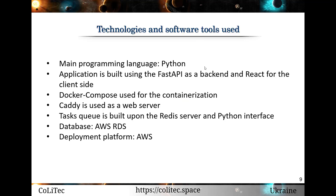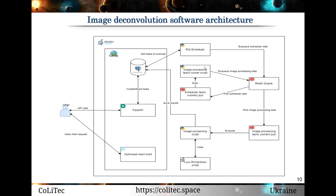Different technologies and tools were used during the development of this system. Programming language is Python, Docker for containerization, React as front-end, Redis server, AWS platform for deployment and database maintenance, and Redis for task queue management. The architecture of the developed Image Deconvolution software is designed for vertical and horizontal scaling. Vertical scaling based on AWS EC2 is used in the current stage of research and development.